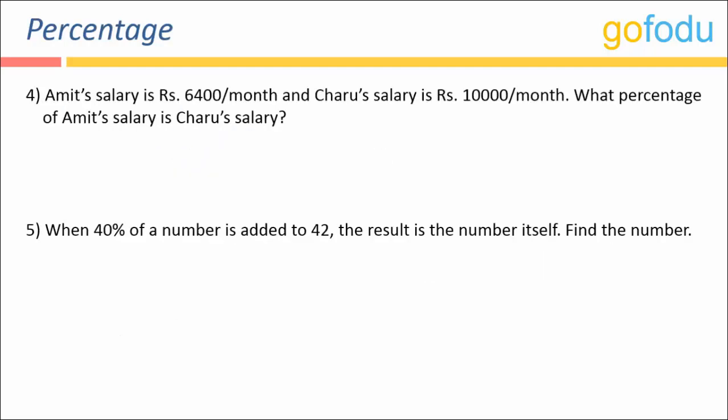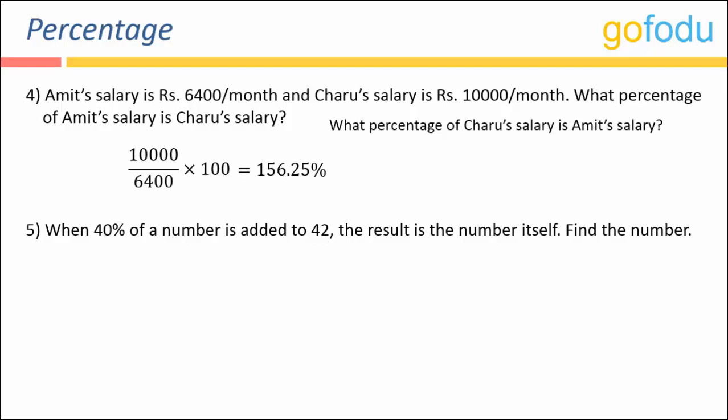What percent of Amit's salary is Charu's salary? The word 'of Amit's salary' tells us the base is Amit's salary — six thousand four hundred goes in the denominator. So the calculation is ten thousand upon six thousand four hundred into hundred, which comes out to be one hundred and fifty-six point two five percent. If instead we ask 'what percent of Charu's salary is Amit's salary?', then six thousand four hundred goes in the numerator and ten thousand in the denominator, giving sixty-four percent.